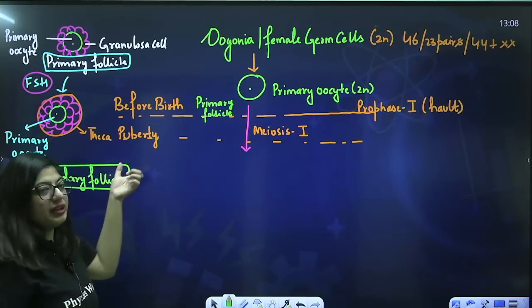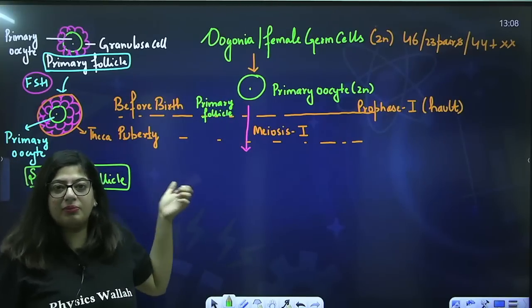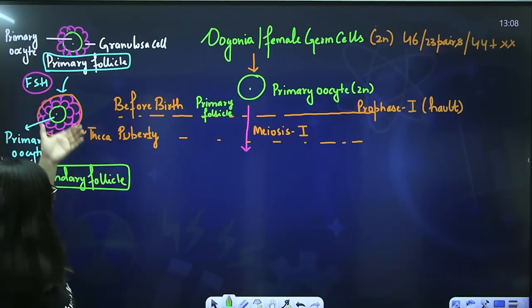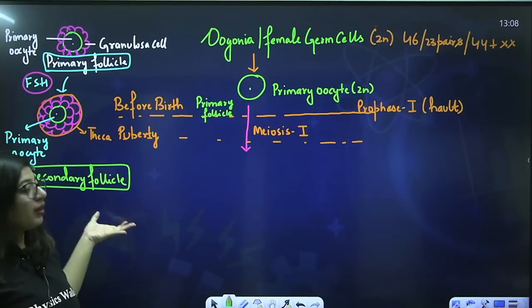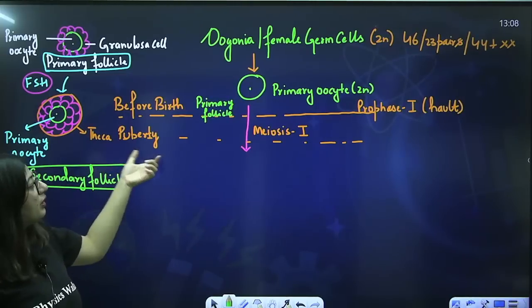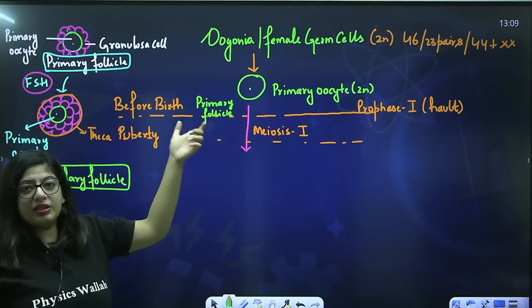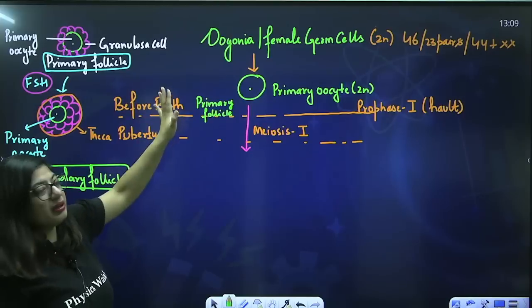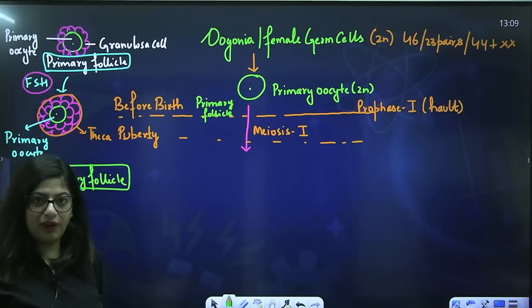She has around 60,000 to 80,000 follicles left, out of which one will be selected and converted into a secondary follicle. So at puberty, when meiosis I is happening, primary and secondary follicles have been developed.